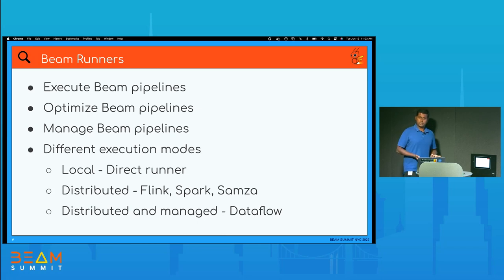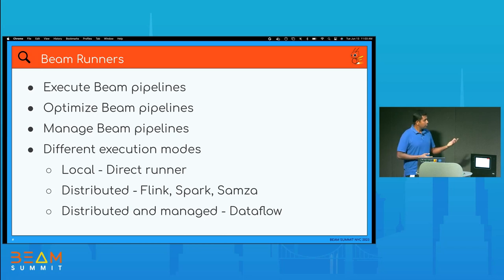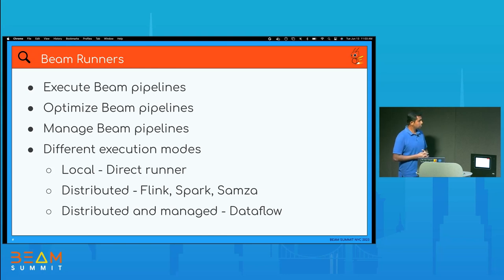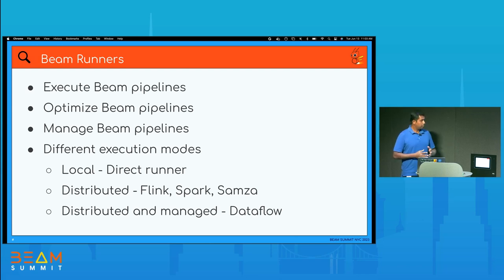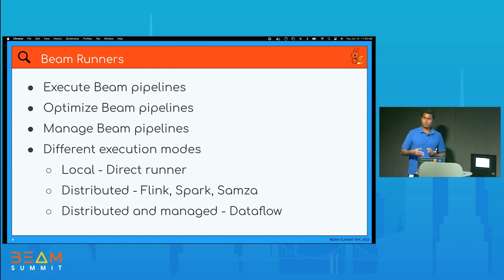There are different runners in Beam with different execution modes. Beam provides local runners, commonly known as direct runners, that run in a single VM. Beam also provides distributed runners like Flink, Spark, and Samza. Beam also supports Dataflow, which is a distributed runner that runs your pipeline in a fully managed way within Google Cloud.